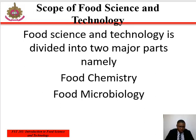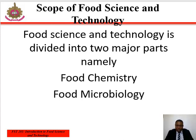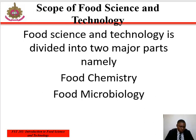Under food microbiology, we have microorganisms that affect or poison food. These are sub-divided into two: bacteria and fungi. Fungi can also be sub-divided into two — yeast and mold.